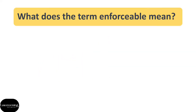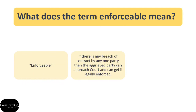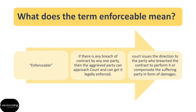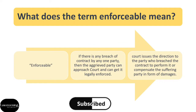After this, the element of enforceability makes the contract a valid contract. So what does the term enforceable mean? Enforceable means that if there is any breach of contract by one party, then the aggrieved party can approach the court and get it legally enforced. The court can issue direction to the party who has breached the contract to either perform the contract or compensate the suffering party in the form of damages. So when the aggrieved party can bring a legal action and claim damages for his suffering from the court, the contract is enforceable.